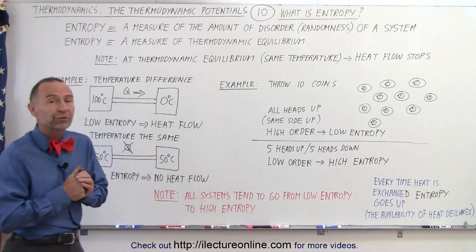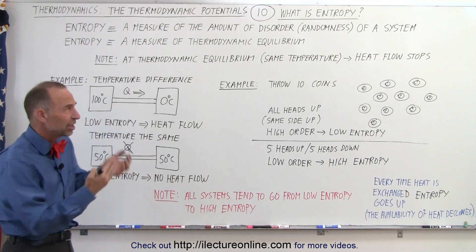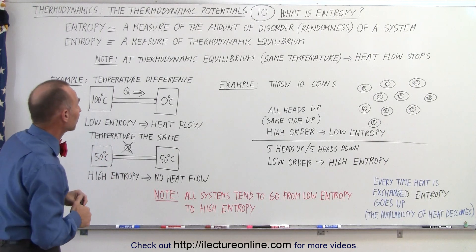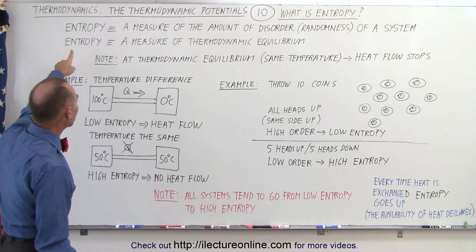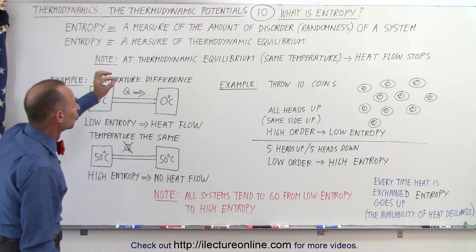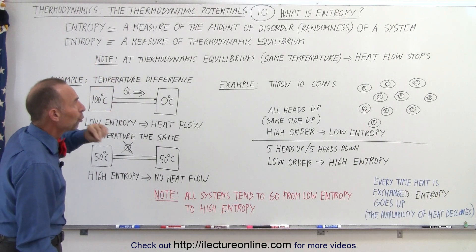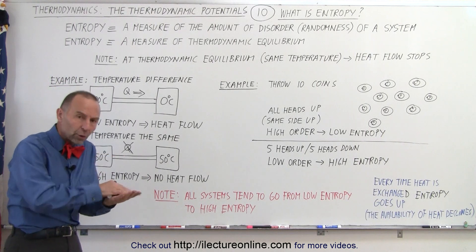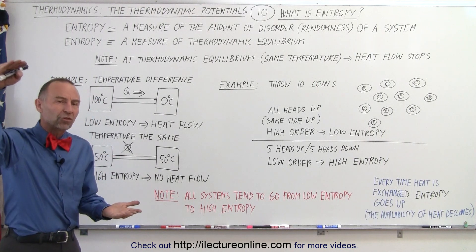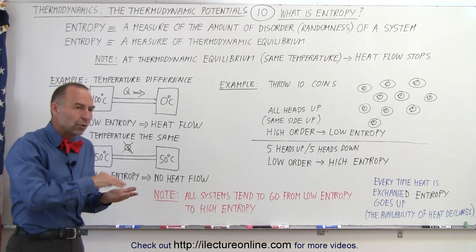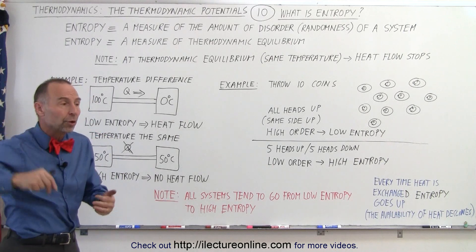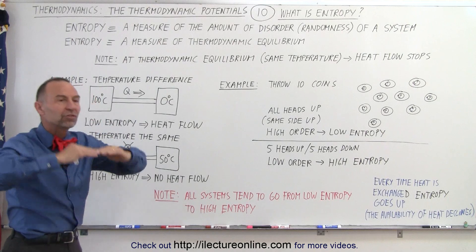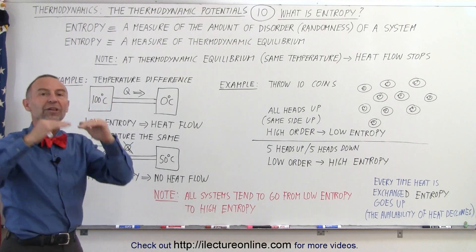We have a couple of definitions for entropy — there's more than a couple, but these two probably do a pretty good job in defining the concept of entropy. First of all, entropy is defined as a measure of the amount of disorder or randomness of a system. Systems tend to go from an ordered state to a disordered state, tending more and more towards disorder, which means that entropy will increase. Increased disorder means increased entropy.